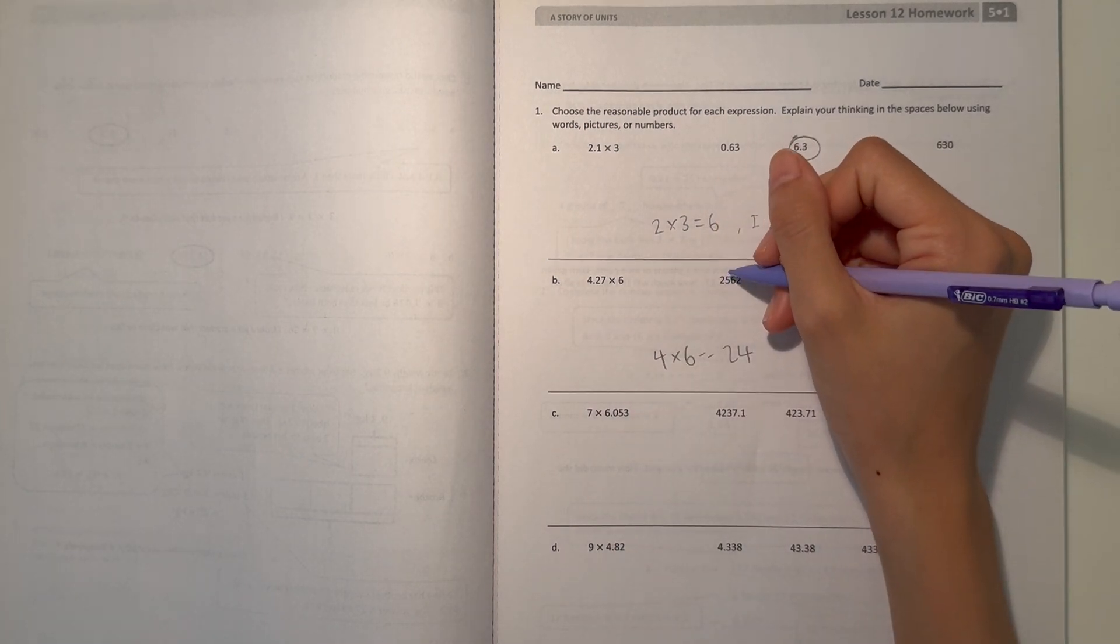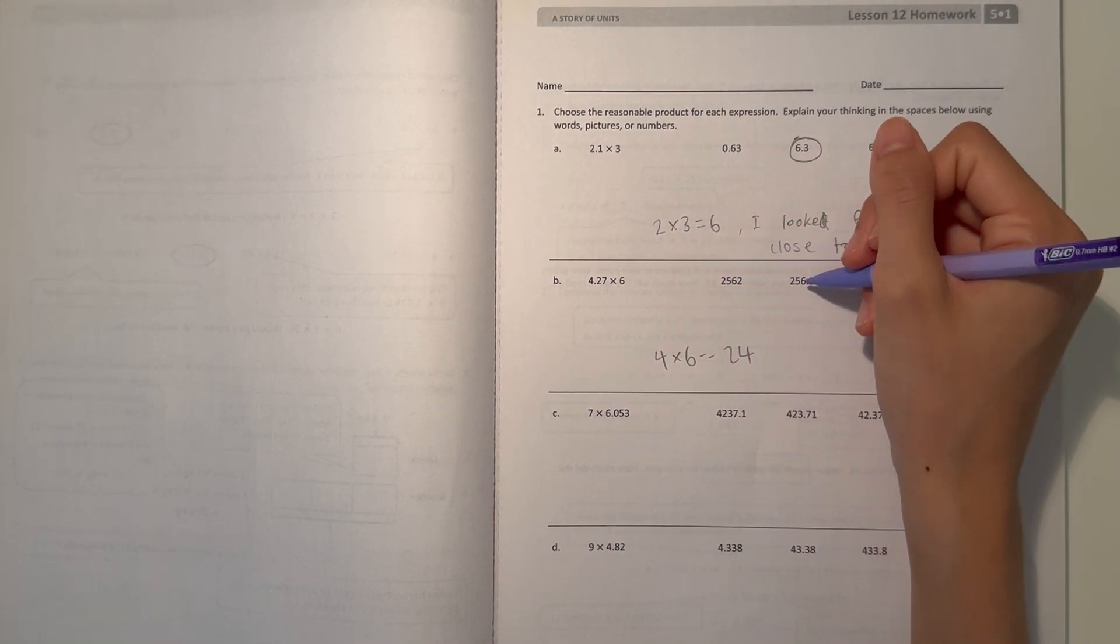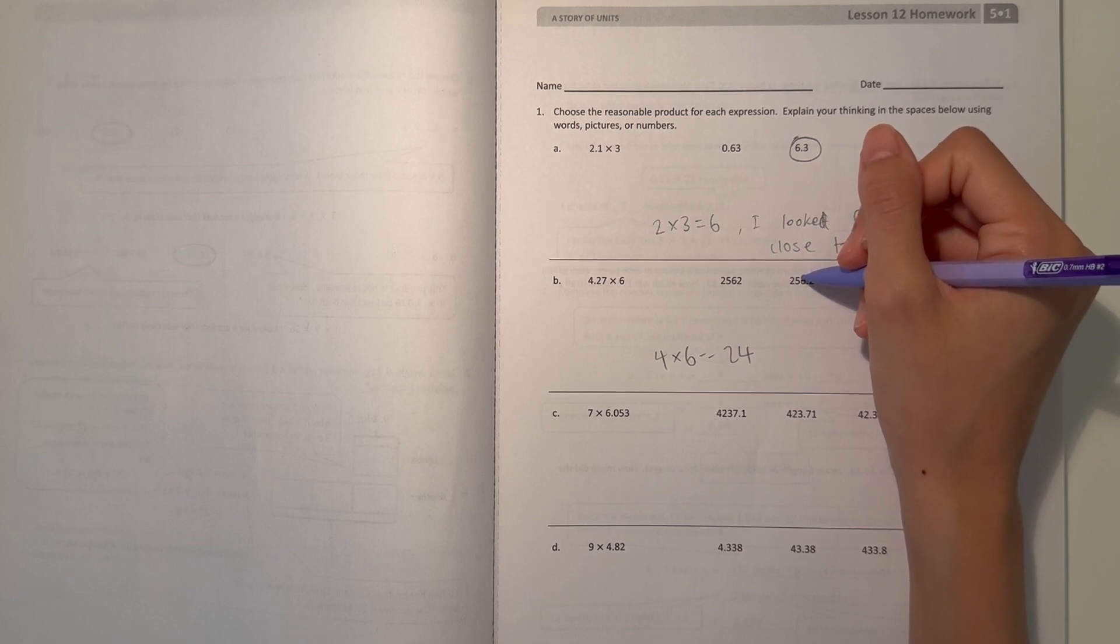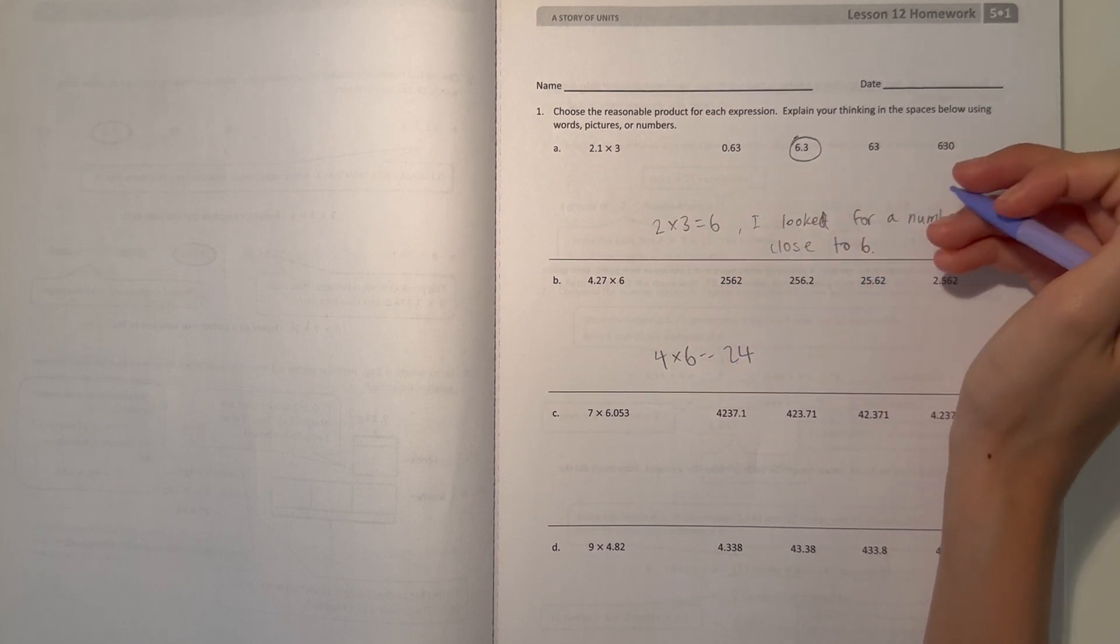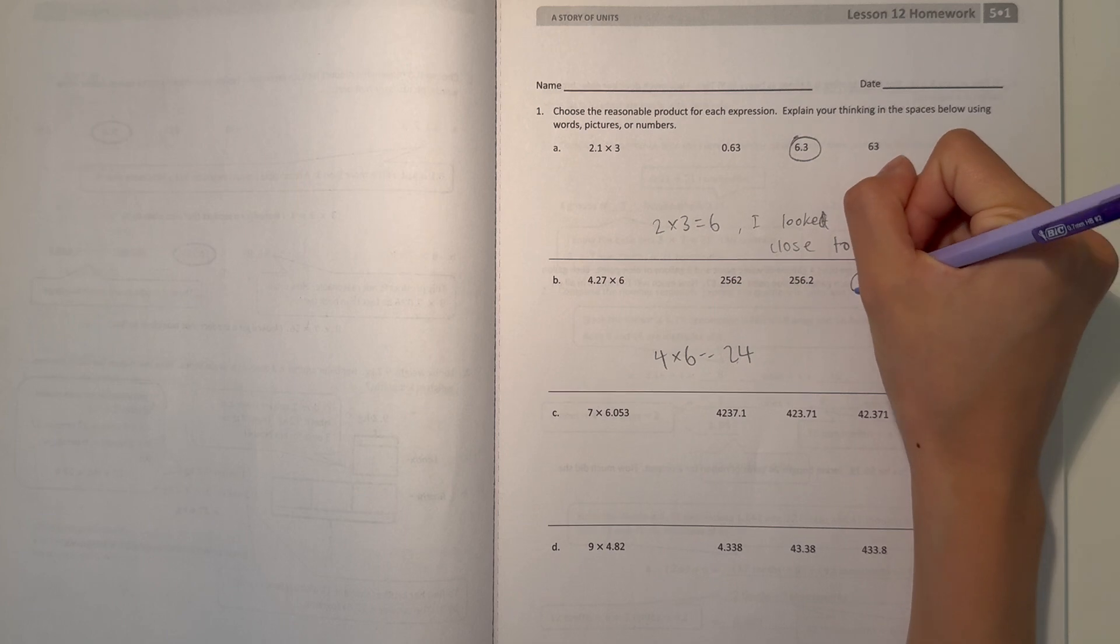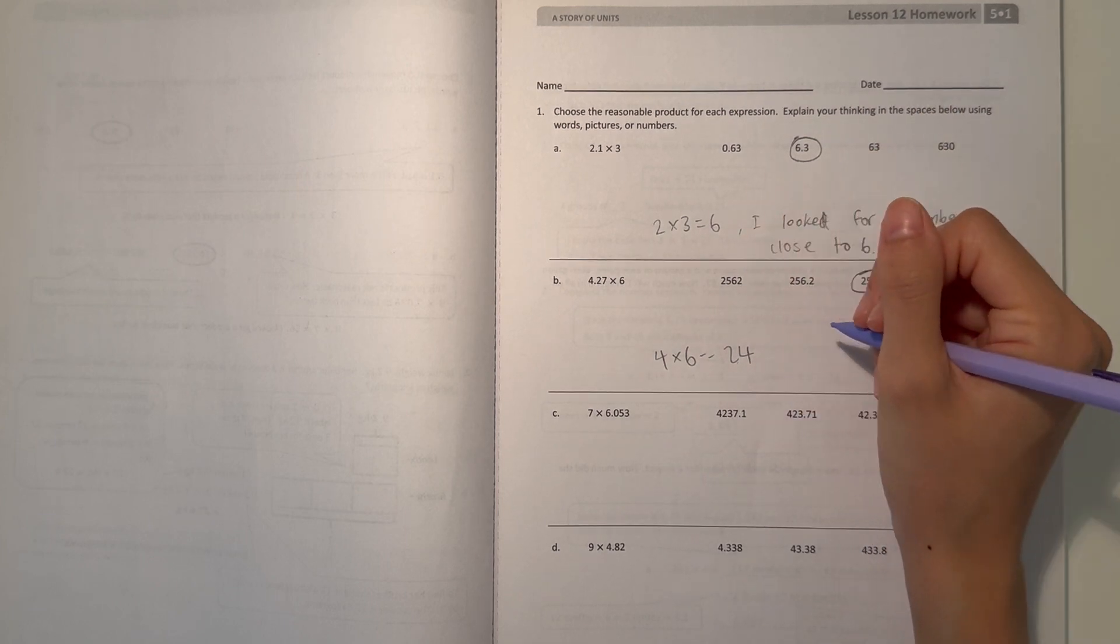So 2,562 would definitely not be your answer. 256.2, nope. 25.62, that could be it. So maybe we have 2.562. So 25.62 is the closest. So that's the most reasonable.